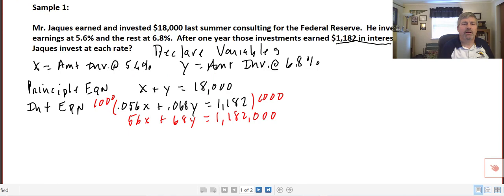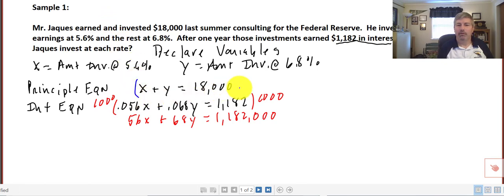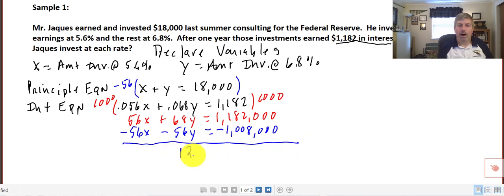You could do the substitution method here, but we're going to use this as an example of how to do elimination. I'm going to multiply the top equation by negative 56. That's going to give me equal and opposite coefficients on x. So negative 56x minus 56y equals 18,000 times negative 56 is negative 1,008,000. Now I have equal and opposite coefficients on x, so my x's are going to drop out.